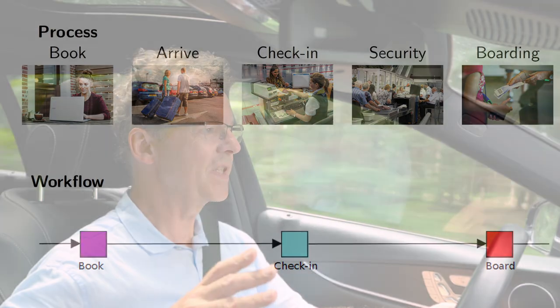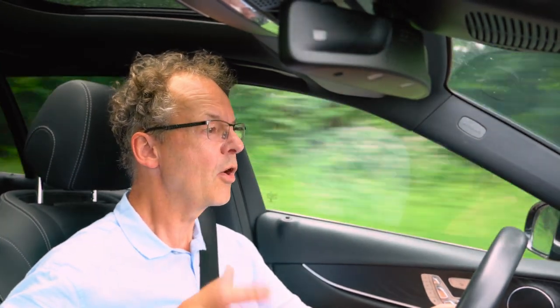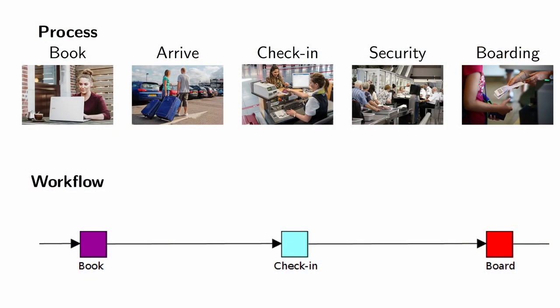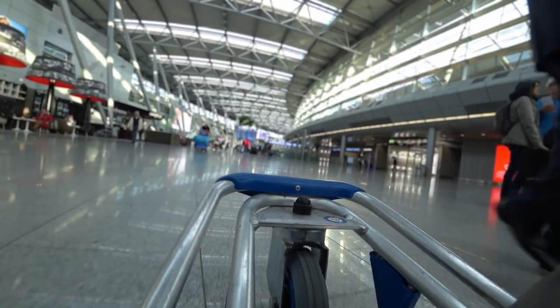Certain steps of this business process are automated with a workflow in modern airlines. When you book your ticket, you do that with an IT system of the airline and you as a passenger go from the status 'new' to the status 'booked', for example. Then all the parts of going to the airport, parking your car, getting your luggage — this is all part of the business process, but it's not part of the workflow.